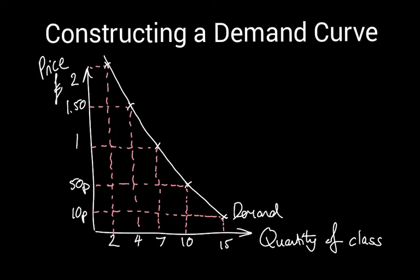This shows us the relationship between demand and price, and it also establishes one of the basic rules of economics: that price and quantity demanded are inversely related to one another. What that means is that as the price goes up, the amount being demanded goes down. So as we move up the vertical axis and increase the price, the result is a fall in the quantity demanded.